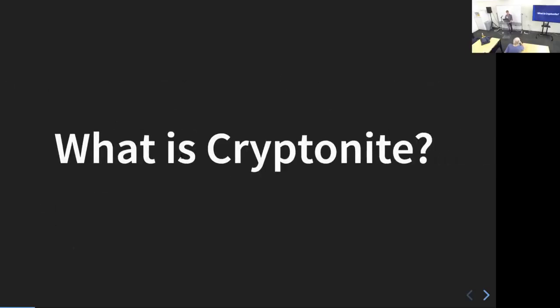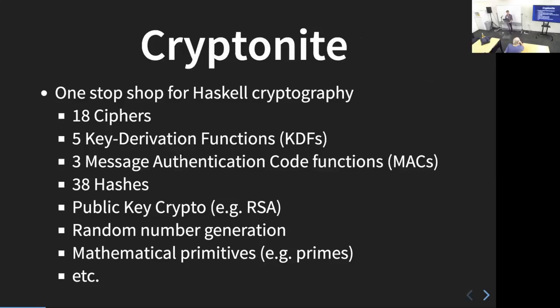Kryptonite is your one-stop shop for hash cryptography, and I really mean it. They have 18 sectors, five key derivation functions which you'd use for passwords, three message authentication code functions — or MACs — which you'd use to make sure a message hasn't been tampered with, 38 hashes, public key cryptography, random number generation, mathematical primitives like generating primes within a certain range. You can get pretty much everything you need, bar a couple of things, just using Kryptonite.